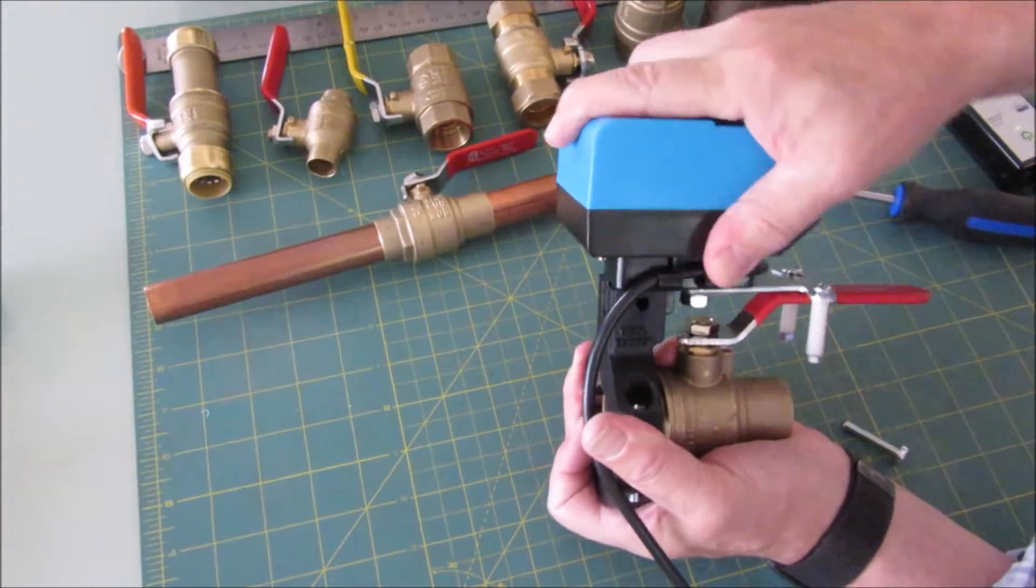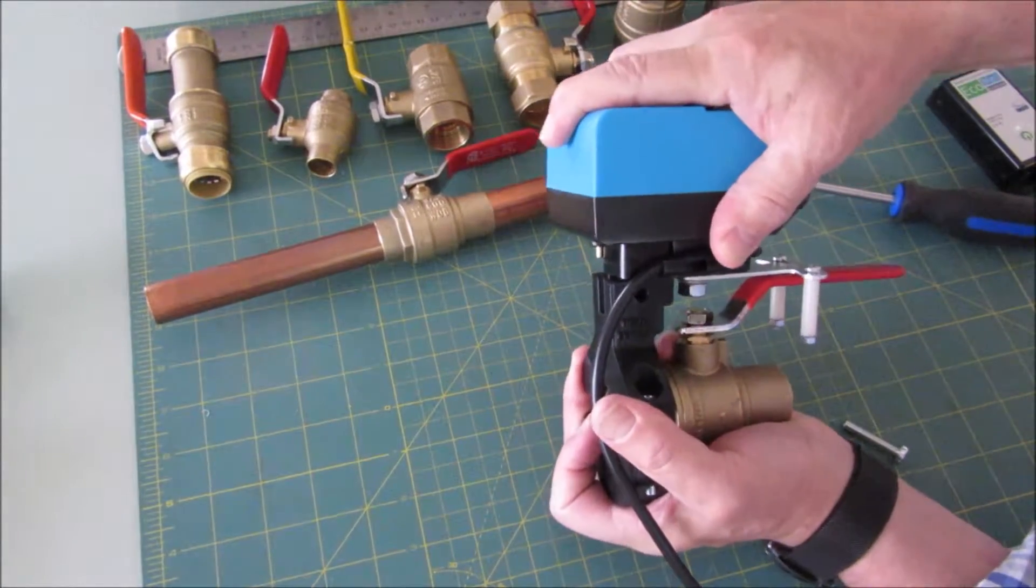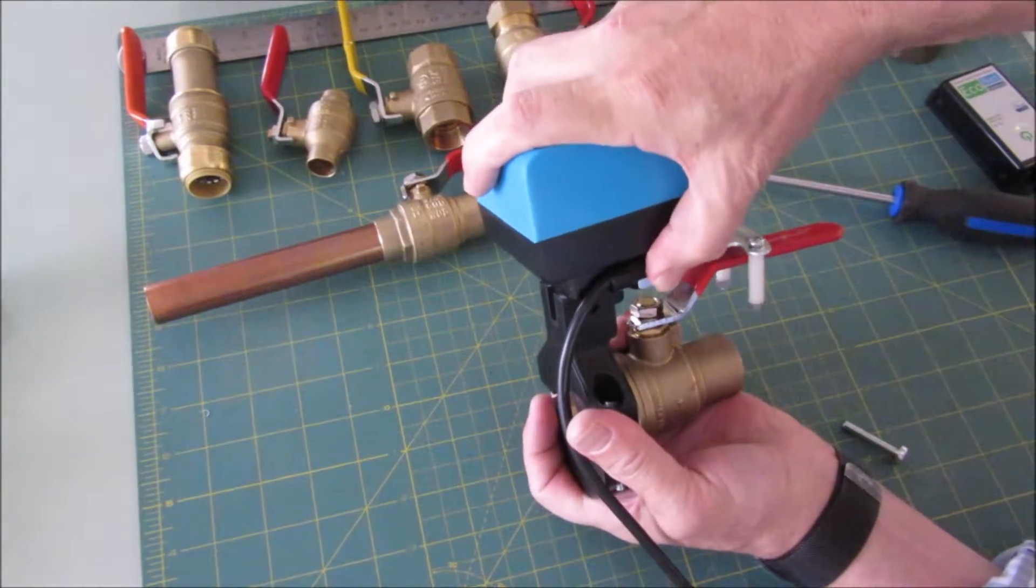And then I shuffle this forward until I get the pivot points even, and that looks pretty good there.